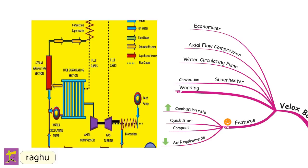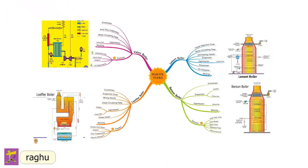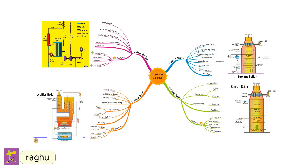Features of the Velox boiler: 1. High combustion rates are possible. 2. The boiler can be quickly started.